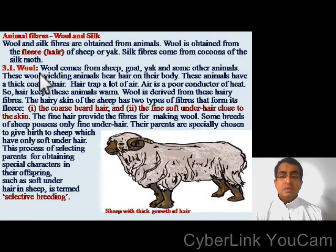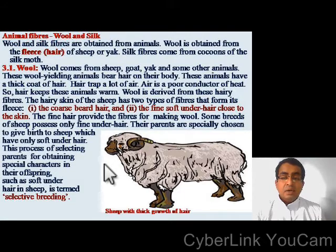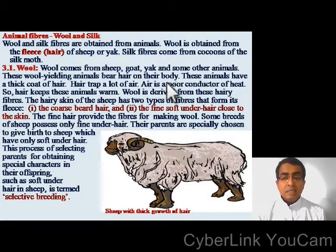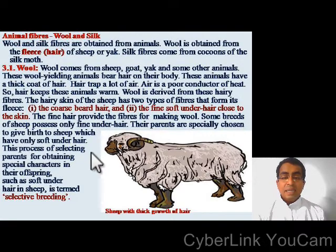First, let us see wool. Wool comes from sheep, goat, yak, and some other animals, and these wool-yielding animals bear hair on their body. These animals have a thick coat of hair which traps a lot of air. Air is a poor conductor of heat, so the hair keeps these animals warm. Wool is derived from these hairy fibers.